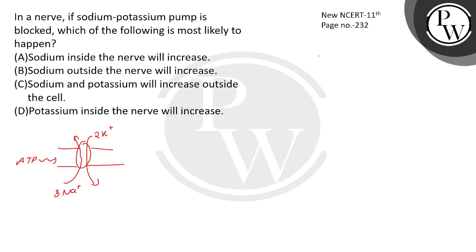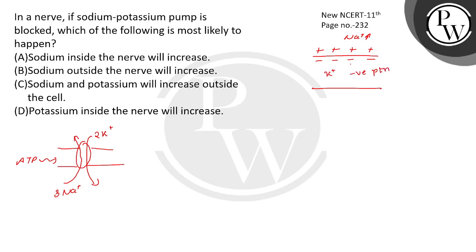Now, when you see a resting nerve fiber, there is a positive charge outside and a negative charge inside. Why is it positive outside? Because there is a higher concentration of sodium ions outside. Inside, there are negatively charged proteins, which is why there is a negative charge inside.